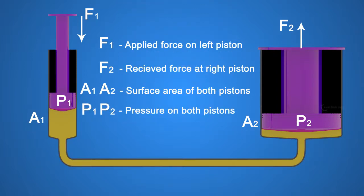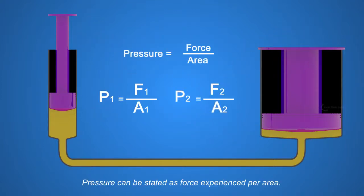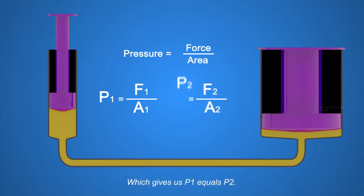P1 and P2 are pressure experienced by both pistons. Pressure can be stated as force experienced per area. So P1 equals F1 by A1, and P2 equals F2 by A2. According to Pascal's law, pressure on both pistons are equal, which gives us P1 equals P2.